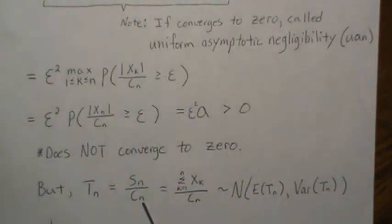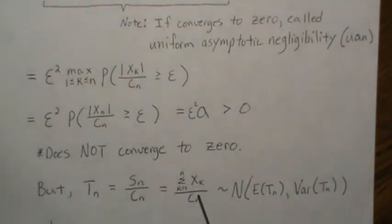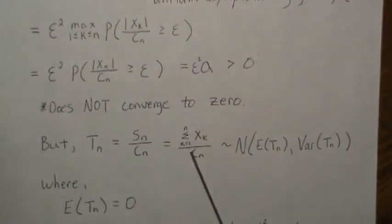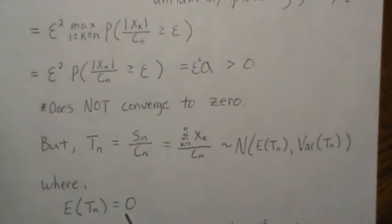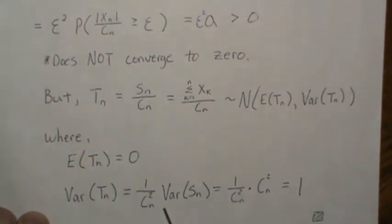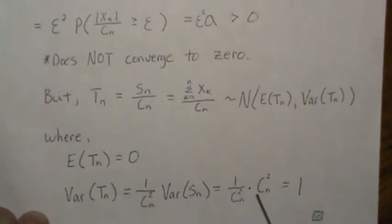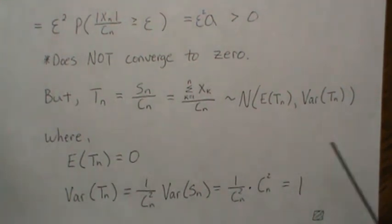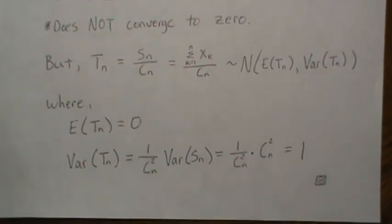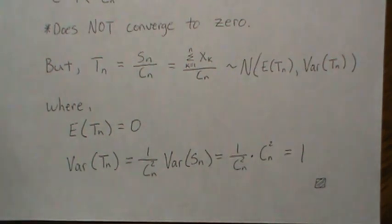But if we look at Tn, it is the sum of independent normal random variables, so it is itself normal with some mean and variance. The mean of Tn is zero, since each Xk has mean zero. The variance of Tn: Cn² comes out, and the variance of Sn is Cn², so those cancel to give variance 1. Therefore Tn is indeed a standard normal random variable — even though the Lindenburg conditions were not met. That's all for today; please like the video and subscribe so you don't miss the next one!